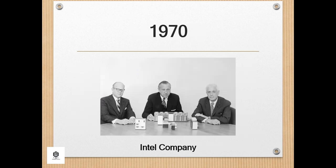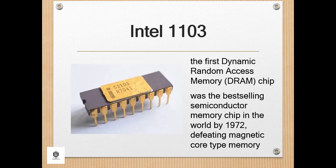In 1970, the newly formed Intel unveiled the Intel 1103, the first dynamic random-access memory, or DRAM, chip. It was the best-selling semiconductor memory chip in the world by 1972, defeating magnetic core type memory. The first commercially available computer using the 1103 was the HP 9800 series.